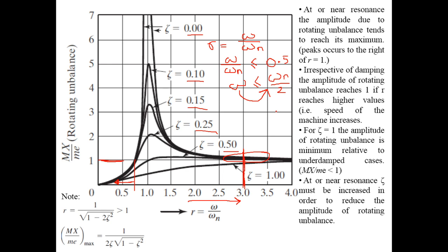Alternatively, you can alter the natural frequency, which is given by √(k/M), where k is the overall stiffness and M is the total mass of the machine. You can tune the values of k and M to satisfy this inequality. So either you operate in the low-r region or the high-r region (r greater than about 2 to 3) and you will keep rotating unbalance at or below one.